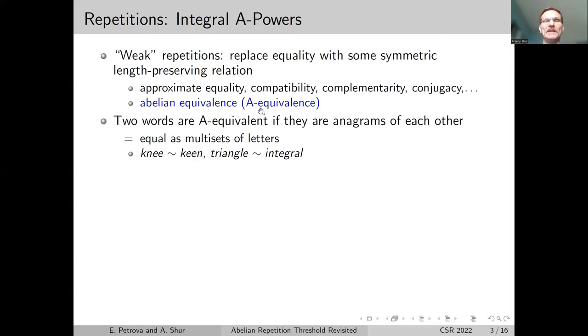Two words are abelian equivalent, or A-equivalent, if they are anagrams of each other. In mathematical terms, they are equal as multi-sets of letters, like these two pairs of English words. We can define integral abelian powers in the same way as integral powers. An abelian square is just a word of the form u₁u₂, where u₁ and u₂ are A-equivalent, and the same for A-cube and A-power.